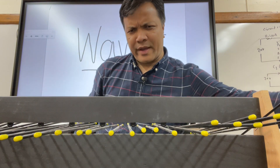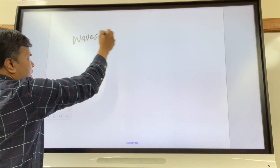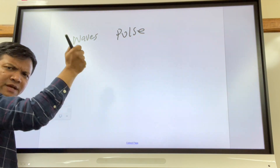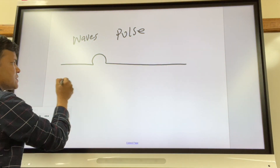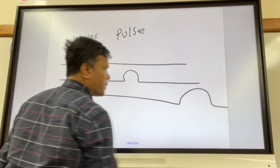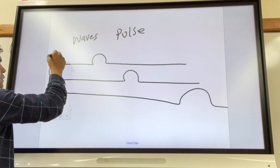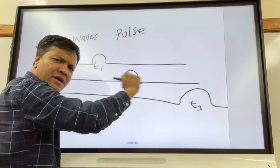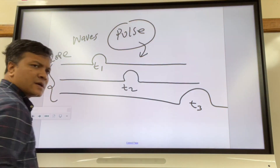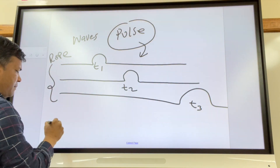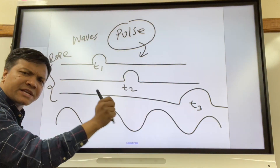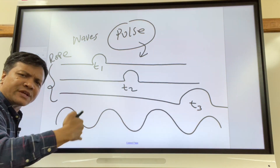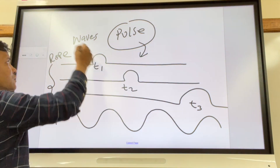We're going to talk about three types of waves today. What is the difference between a wave and a pulse? If you take a rope and move it up and down once, you create a pulse — just one pulse on a rope at different times T1, T2, T3. You create a wave by continuously creating pulses using a rope: move it up and down forever, creating continuous pulses, which we call waves.